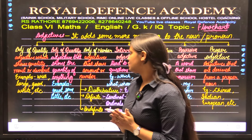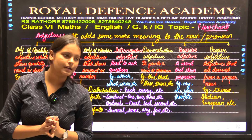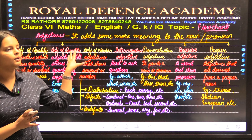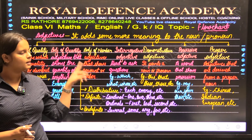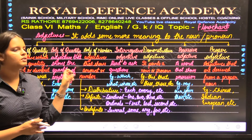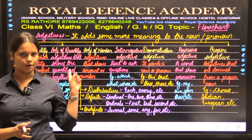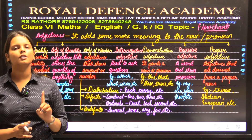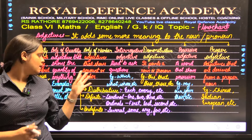Next is adjective of number. Adjective of number deals with countable nouns. It shows the amount or numeral number of a noun or pronoun present in the statement.